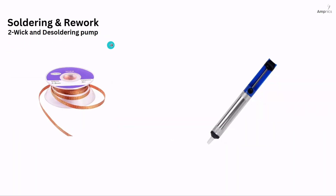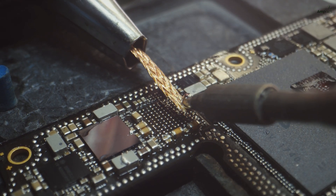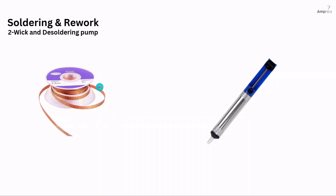Number two: wick and desoldering pump. A desoldering wick is braided copper wire used to absorb and remove unwanted solder from joints. Placed over the solder and heated with a soldering iron, it wicks away the molten solder, making it easier to remove components or clean up excess solder. A desoldering pump — also called a solder sucker — is a spring-loaded suction tool used to suck up molten solder from a joint. After heating the solder, the pump is triggered to quickly pull the liquid solder away, aiding in component removal and clean up.